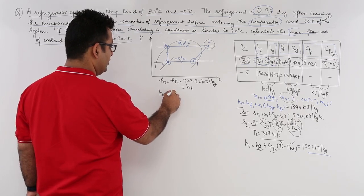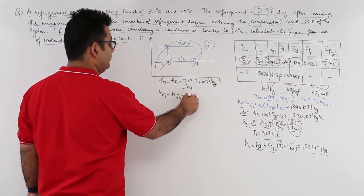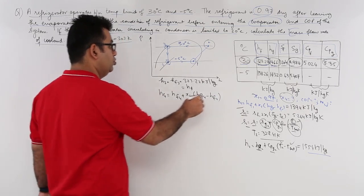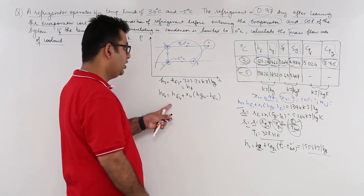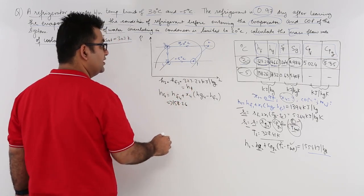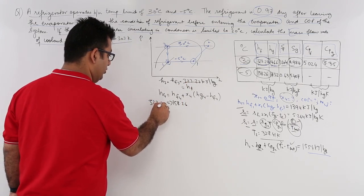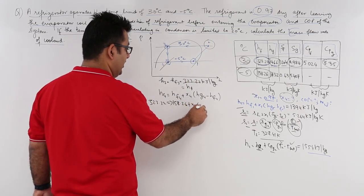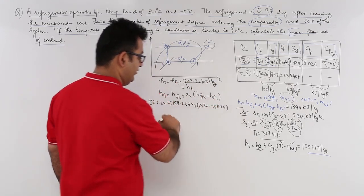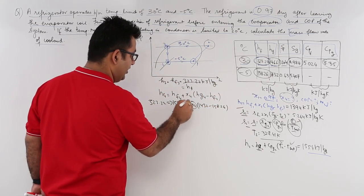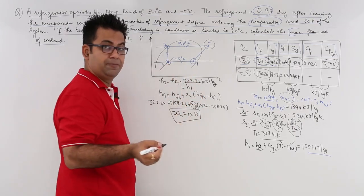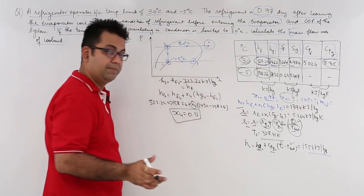To find x4: H4 = HF4 + x4 · (HG4 − HF4), where this corresponds to the temperature of minus 5°C. HF4 = 158.26 kJ/kg, HG4 = 1432 kJ/kg, and H4 = 323.22 kJ/kg. Solving for x4 gives x4 ≈ 0.13. So the refrigerant is 13% dry before entering the evaporator.